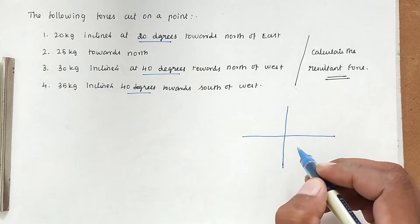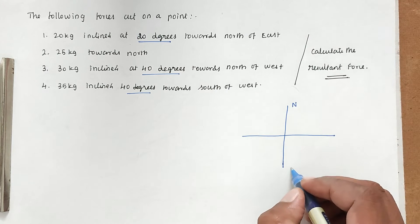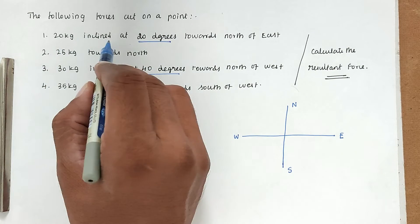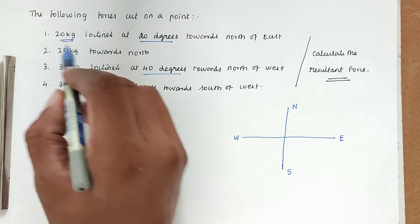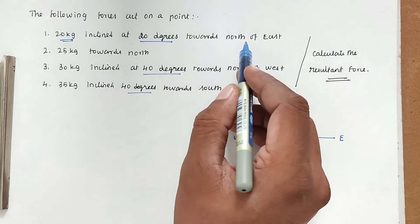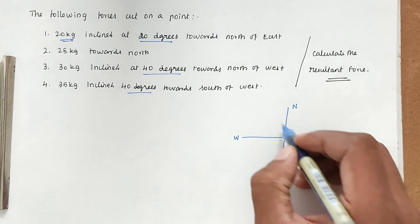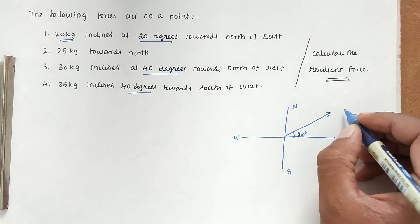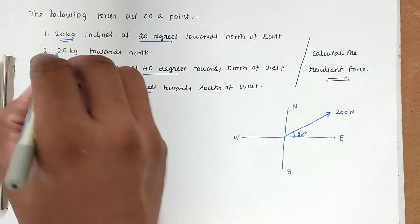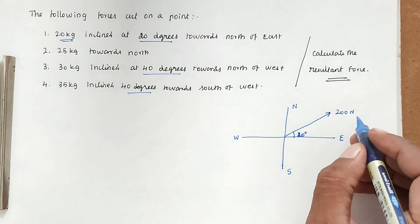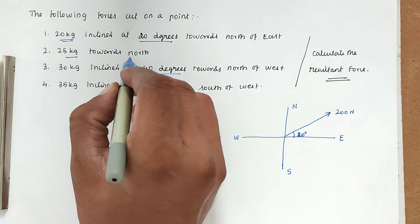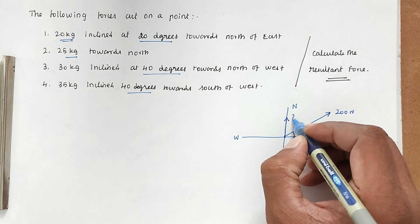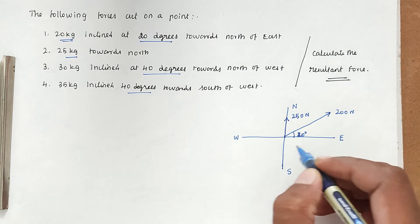In the diagram, we mark north, south, east, and west. The first force of 20 kg is inclined 20 degrees towards the north of east — converting to Newtons, that is 200 N. The second force is 25 kg towards the north, which is a vertical force equal to 250 N.